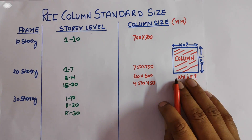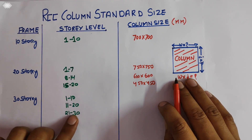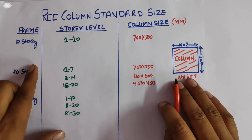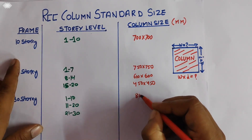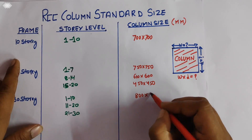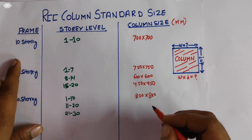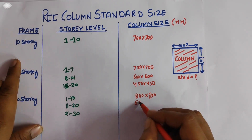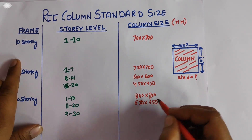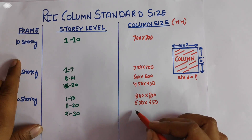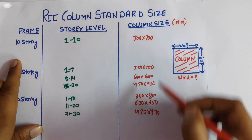Now for the 30-story building, we have three subcategories: story levels 1 to 10, 11 to 20, and 21 to 30. For 1 to 10 in a 30-story building, we take the column size as 800 by 800 mm. For 11 to 20, we take it as 650 by 650 mm. For 21 to 30, the column size is 470 by 470 mm. All column sizes are in mm.